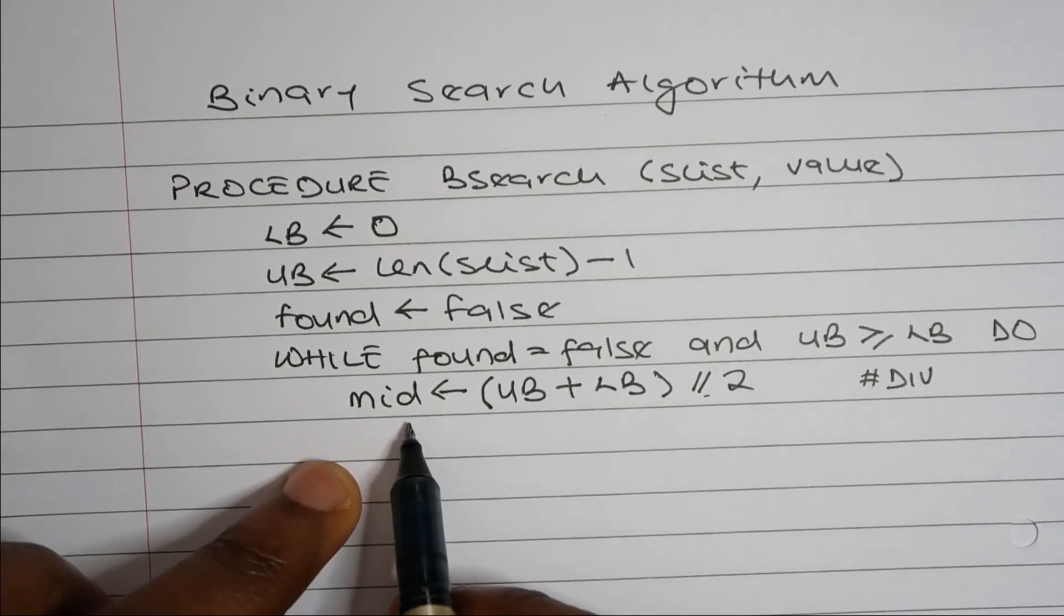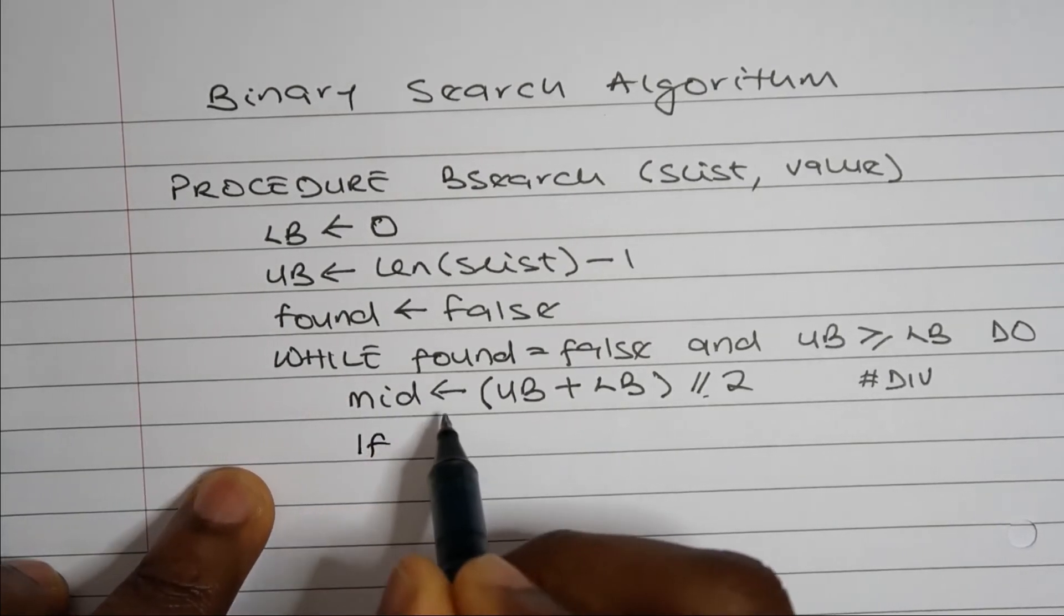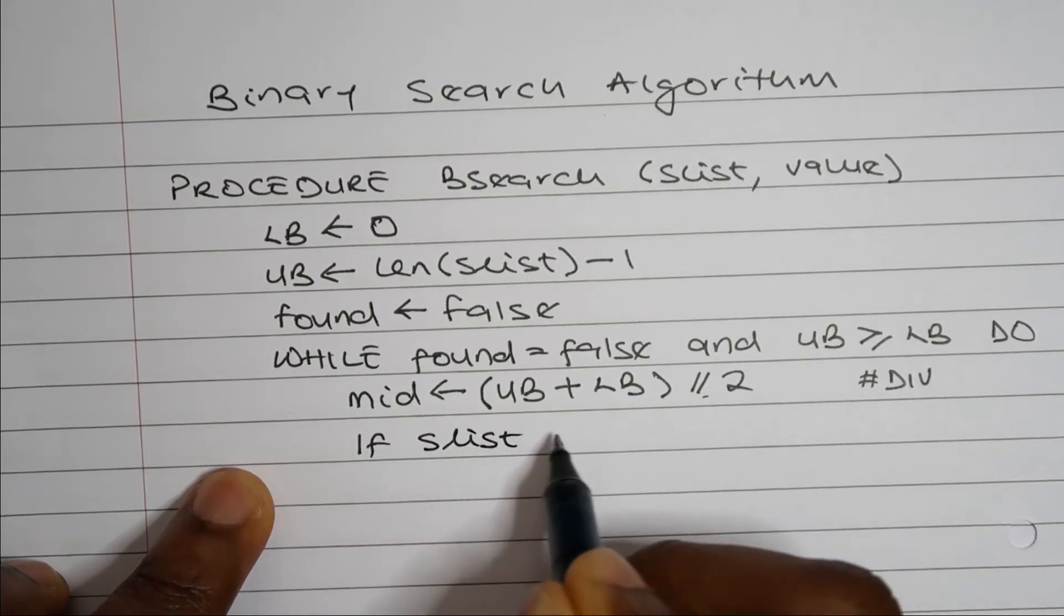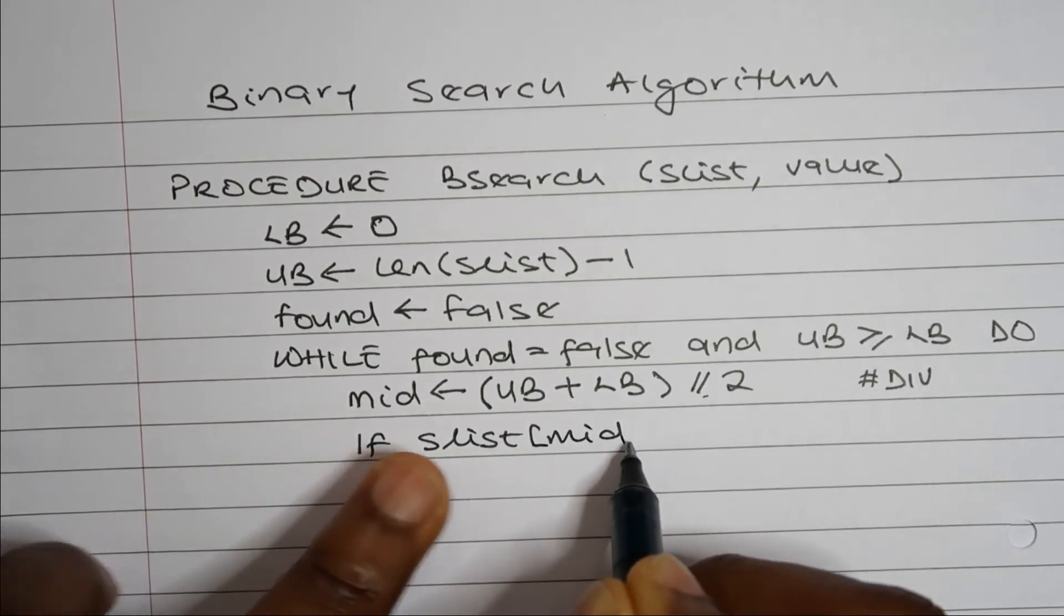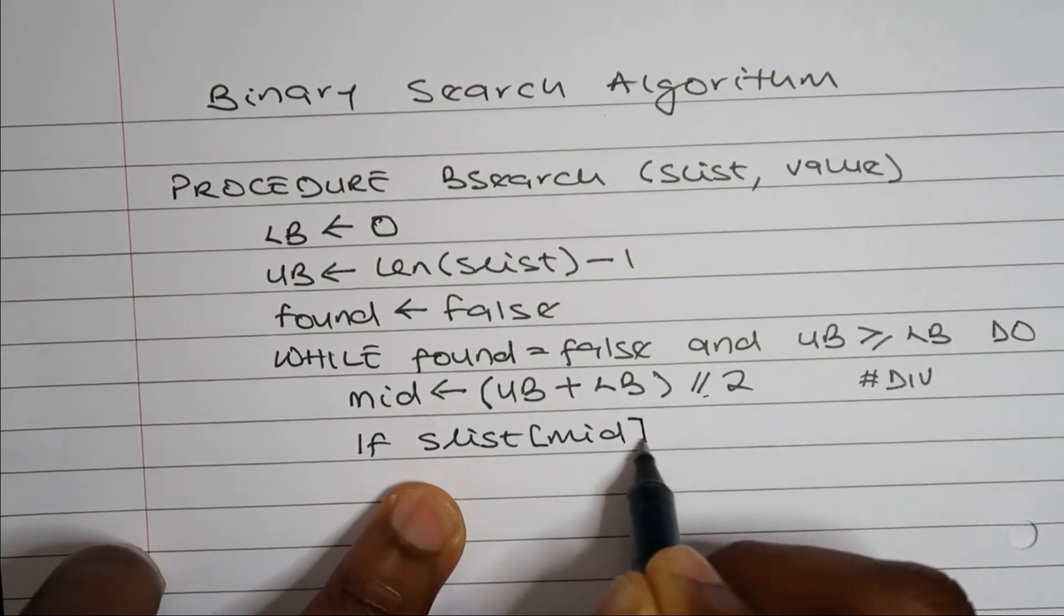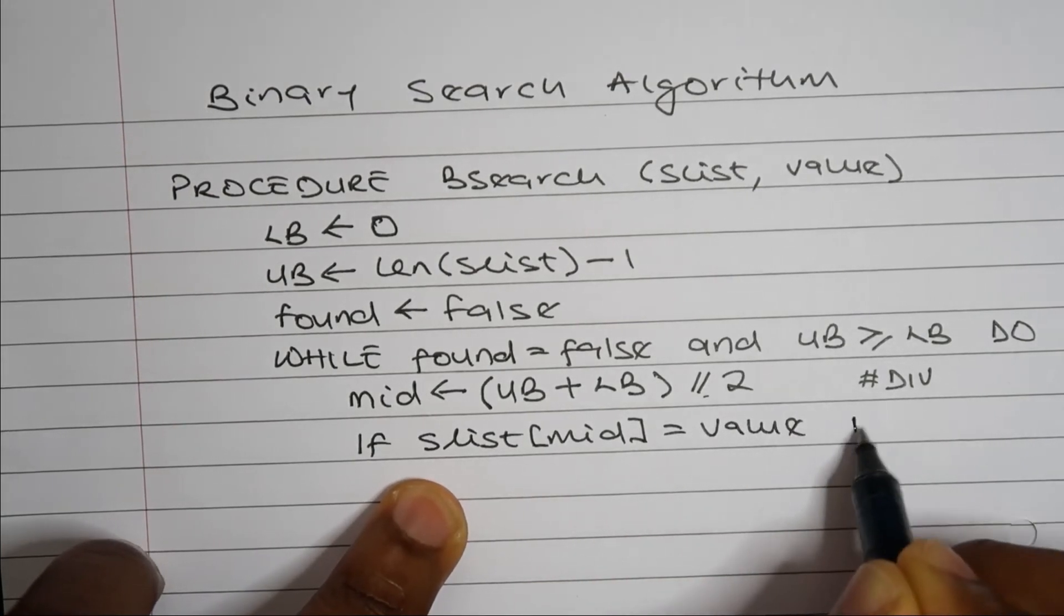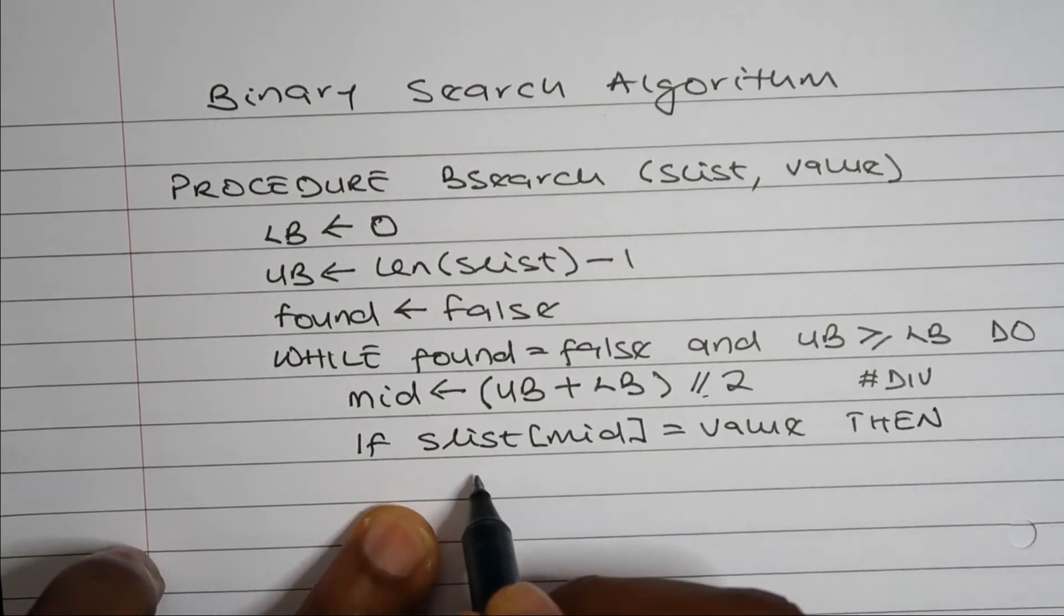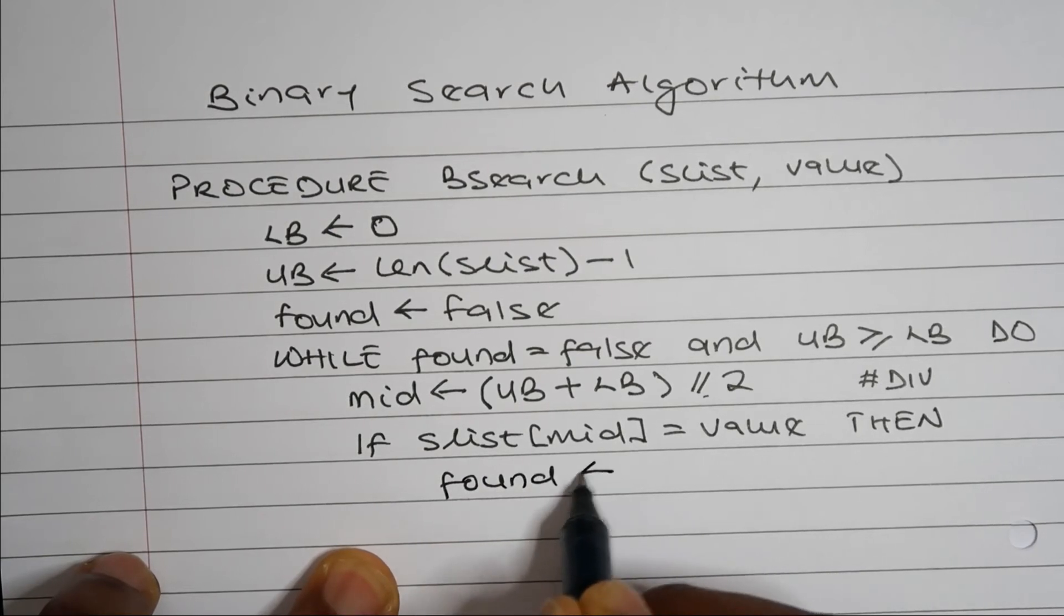Now, now we found the index position of our midpoint. The next thing we're going to do is check if the value in our midpoint, so if SList mid, which is the value in our midpoint, we're going to check is that value equal to the value we're looking for. If it is, we want to say that found is true.